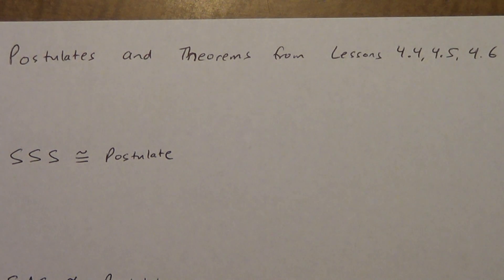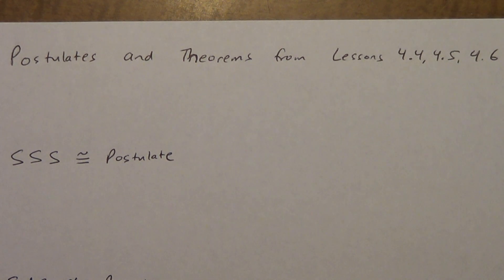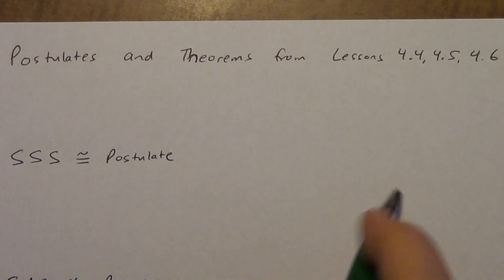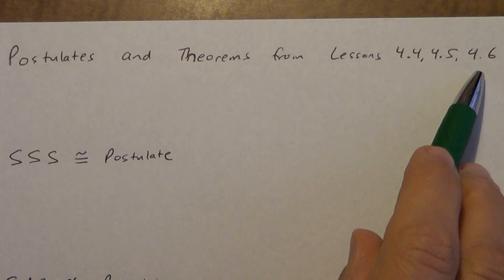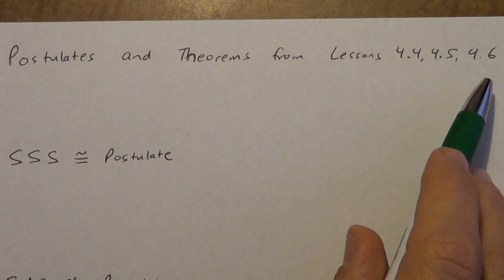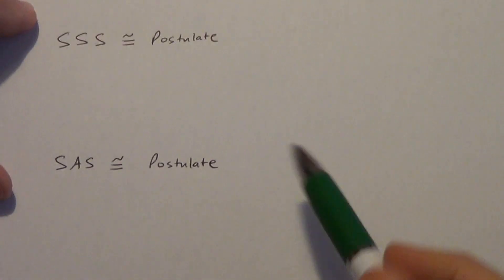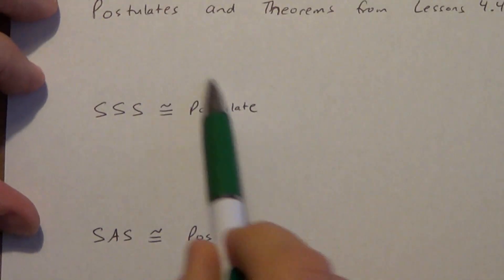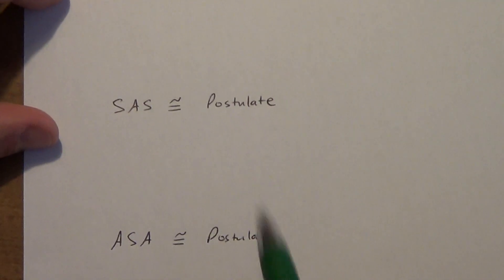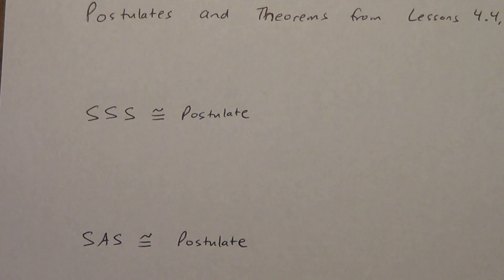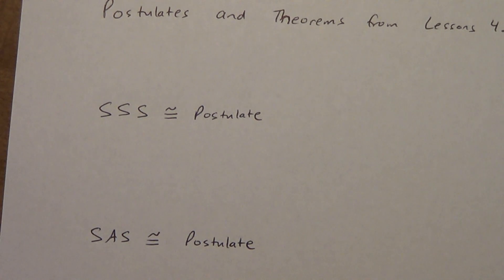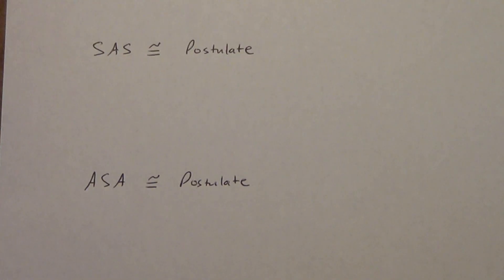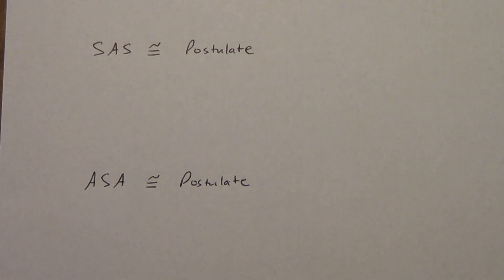We are going to do three lessons all together in the next couple videos — lessons 4.4, 4.5, and 4.6. The book has a couple postulates and theorems: three postulates and two theorems. Instead of following the book's order, I'm going to teach all of them in one video, show brief examples in a second video, and then do some complete proofs in the third video.